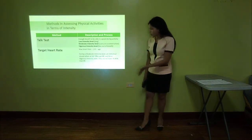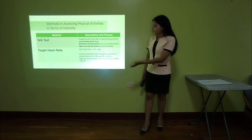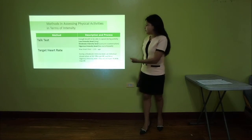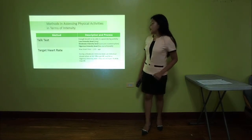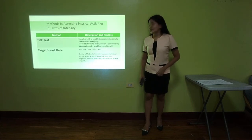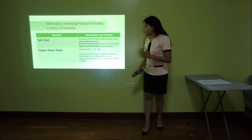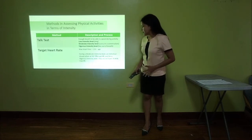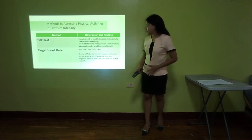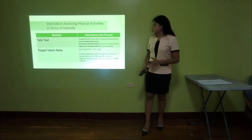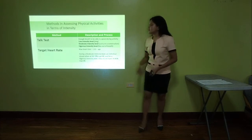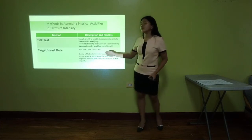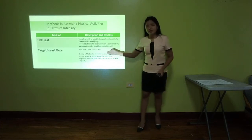The second method is target heart rate. During a moderate intensity level, an individual should attain at least 50 to 70 percent of max heart rate. And for a vigorous intensity level, they should have 70 to 85 percent of max heart rate. This is how we compute our max heart rate.